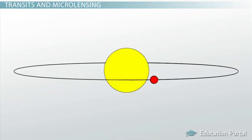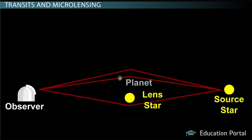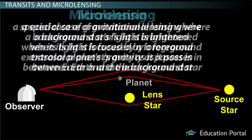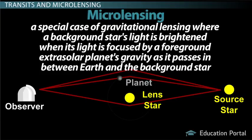On the flip side, sometimes we can detect a planet when it makes its parent star brighter. This is known as microlensing, a special case of gravitational lensing where a background star's light is brightened when its light is focused by a foreground extrasolar planet's gravity as it passes in between Earth and the background star.